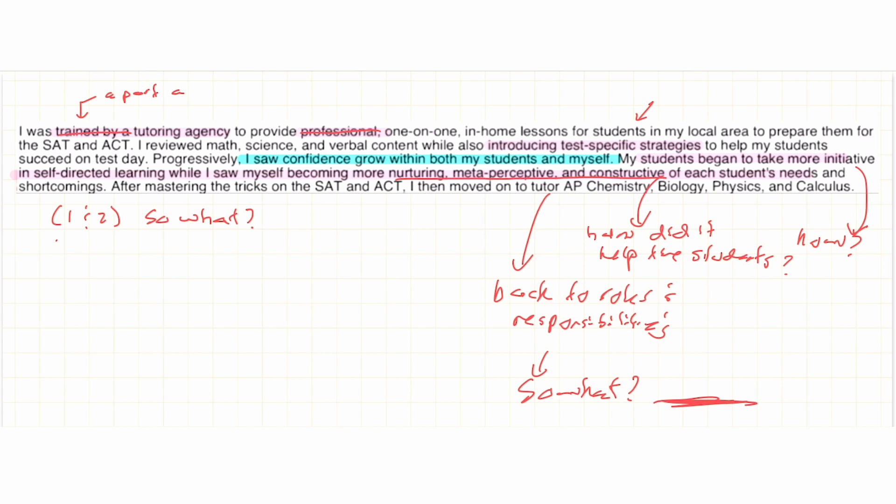So to summarize, by asking the question, so what? I am now able to create an essay that is much more meaningful and much more centered on the impact of the activity on myself and my community, which is what the activity section is all about. And I have a few more examples that I would love to walk through. But because we don't have much time right now, I will save that for another video. If you would like to see me analyze a few more essays, please let me know in the comment section down below. And I will be sure to do that for you guys.